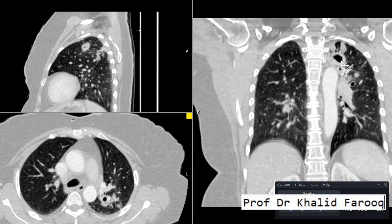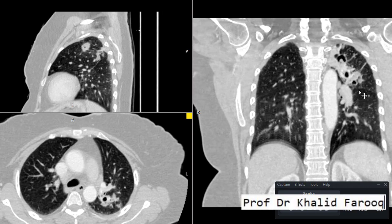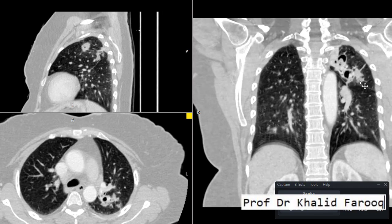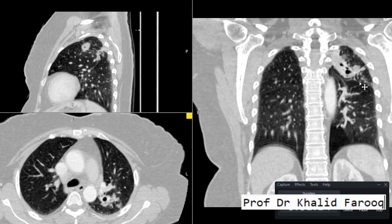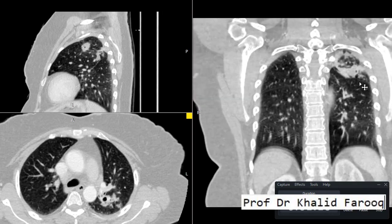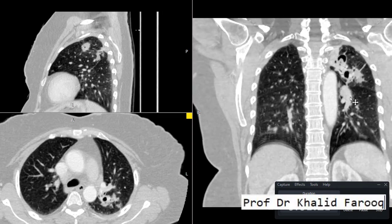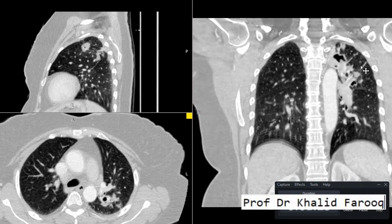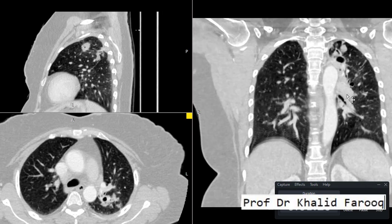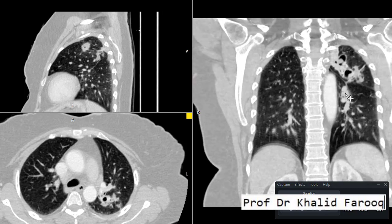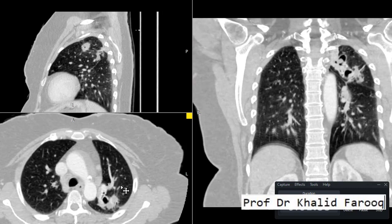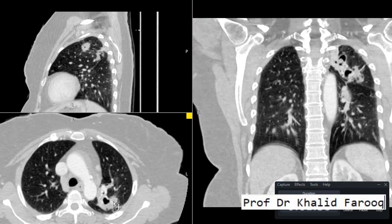Here we can see irregular thick-walled cavities with surrounding variable-sized nodules and apical pleural thickening. We can see fibrotic changes around the above-described cavities and nodules. This can be confirmed on axial images as well, where we can see the irregular thick-walled cavities.